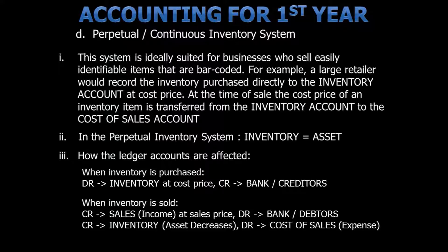When the inventory is sold, there are two transactions that need to take place. Firstly, we will credit the sales — this is an income, and income increases on the credit side. This is done at the sales price. Then we will debit bank or debtors, depending on how the transaction took place.